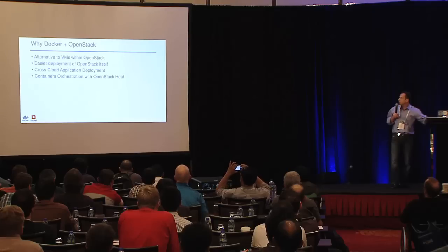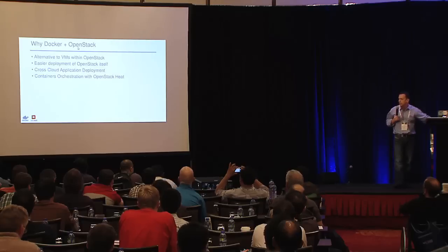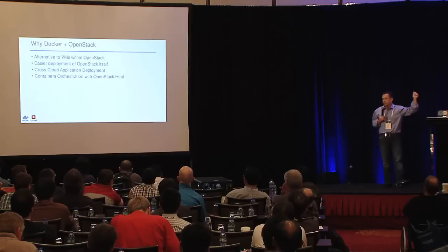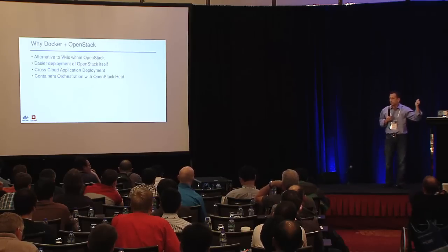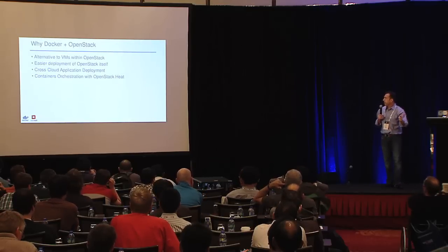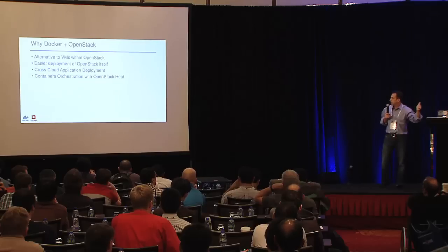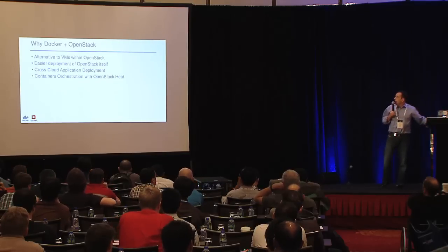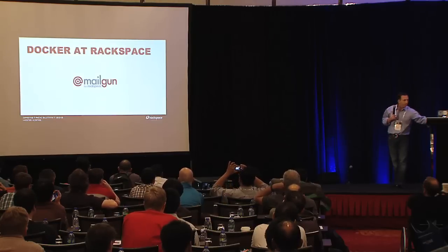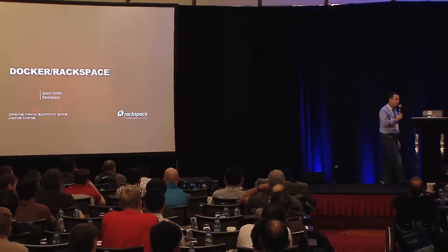Quick introduction to Docker and OpenStack: Docker has been accepted into Havana. We have a driver for Nova, so you can essentially treat Docker as another form of a VM. We have other interesting use cases — if you come to the Dell booth, you can see Docker integrated with Crowbar for deploying OpenStack. Cross-cloud application deployment you'll see here, and there's a design session on Friday around integration with Heat. With that, I'd like to turn things over to Rackspace, which is important to us not only in terms of how they use Docker, but as a major OpenStack contributor and a big contributor to this demo. This is Jason Smith.